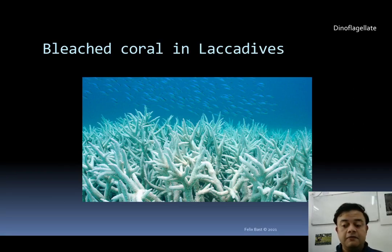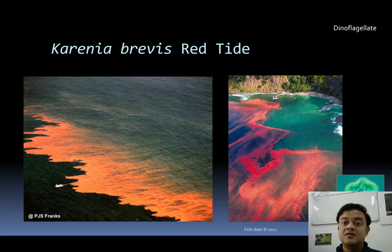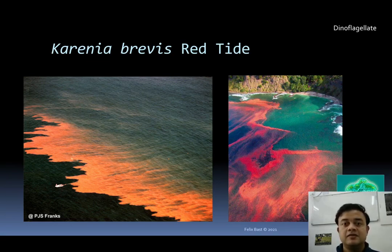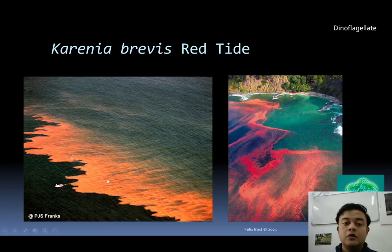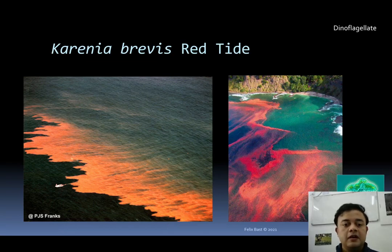Many dinoflagellates form hazardous algal blooms (HABs). One example is Karenia brevis, which forms something called red tide — the waves themselves turning red in color. This is an aerial photograph taken from a helicopter or aircraft showing a large beach area, many kilometers wide, with a cruise liner visible for scale, entirely covered in red bloom.